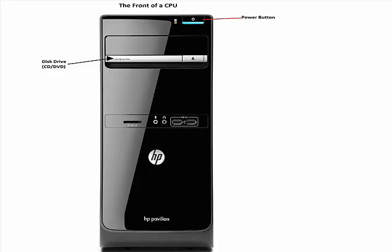Another type of drive that a disk drive may contain is a CD-RW drive. With this, you can also read CD-ROMs, but it is used to copy information onto the CD. RW means that it is re-writable — you can write data on the disk multiple times.